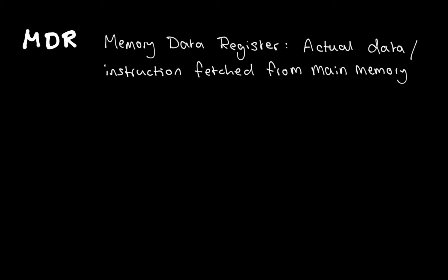The memory data register, or MDR, contains the actual data or instruction that we fetch from main memory. This is our incoming box. So we go from the memory address register, the MAR, to main memory, and then to the memory data register.